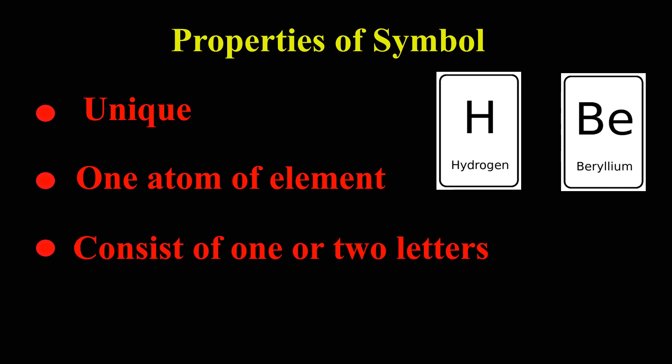3. Chemical symbols usually consist of one or two letters, where first letter is always written in capital letter and the second letter is always written in small letter.